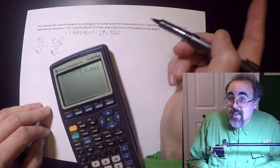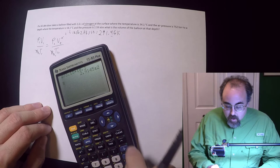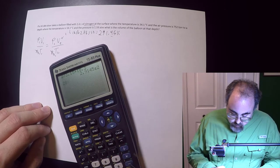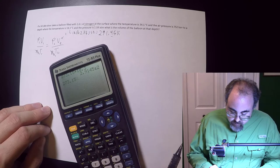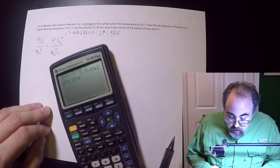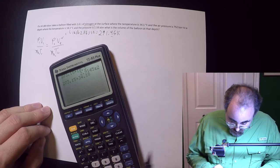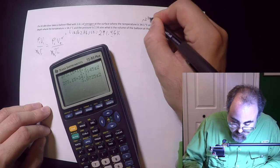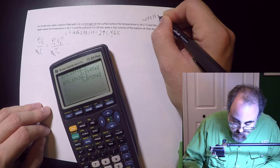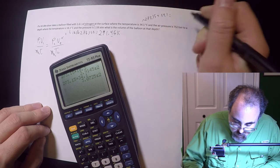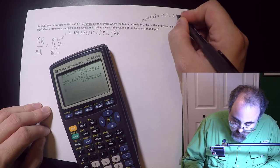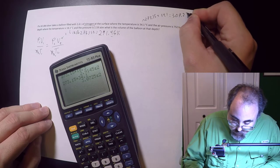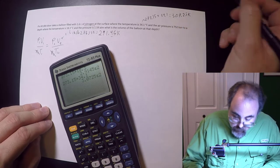But I'm not going to round because I'm not done yet. Let's go for the next one, which would be 273.15 plus 34.1 gives me 307.25 Kelvin.